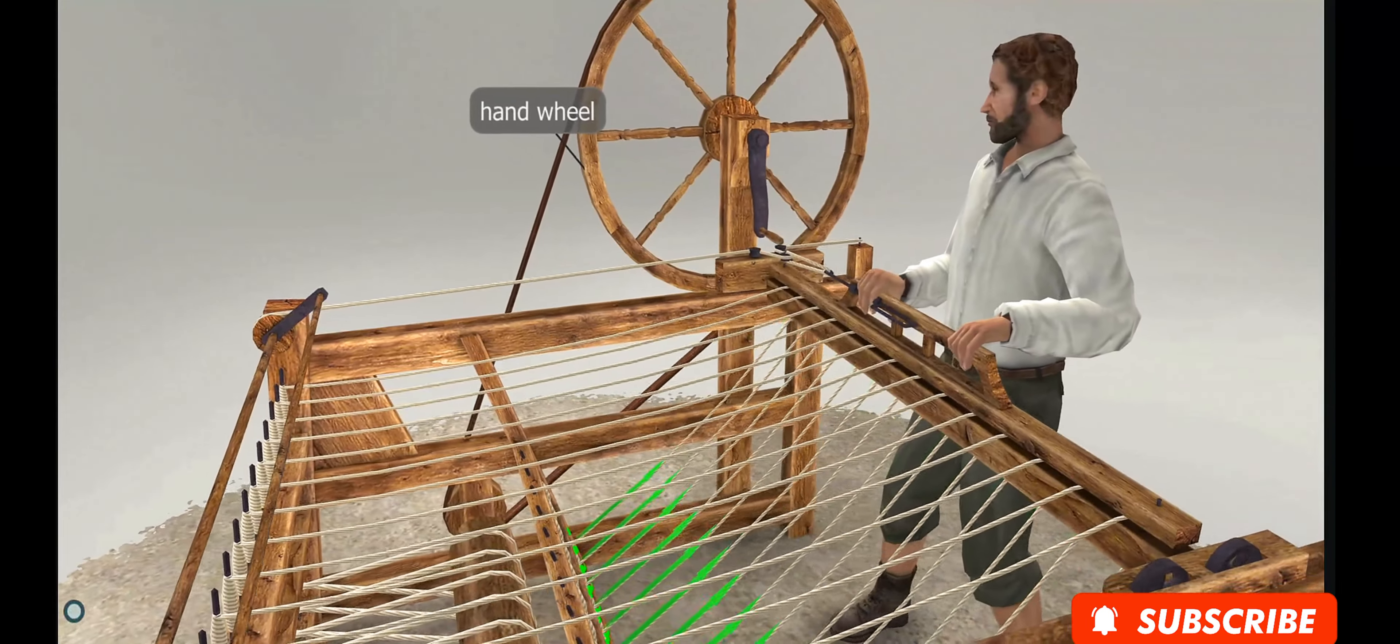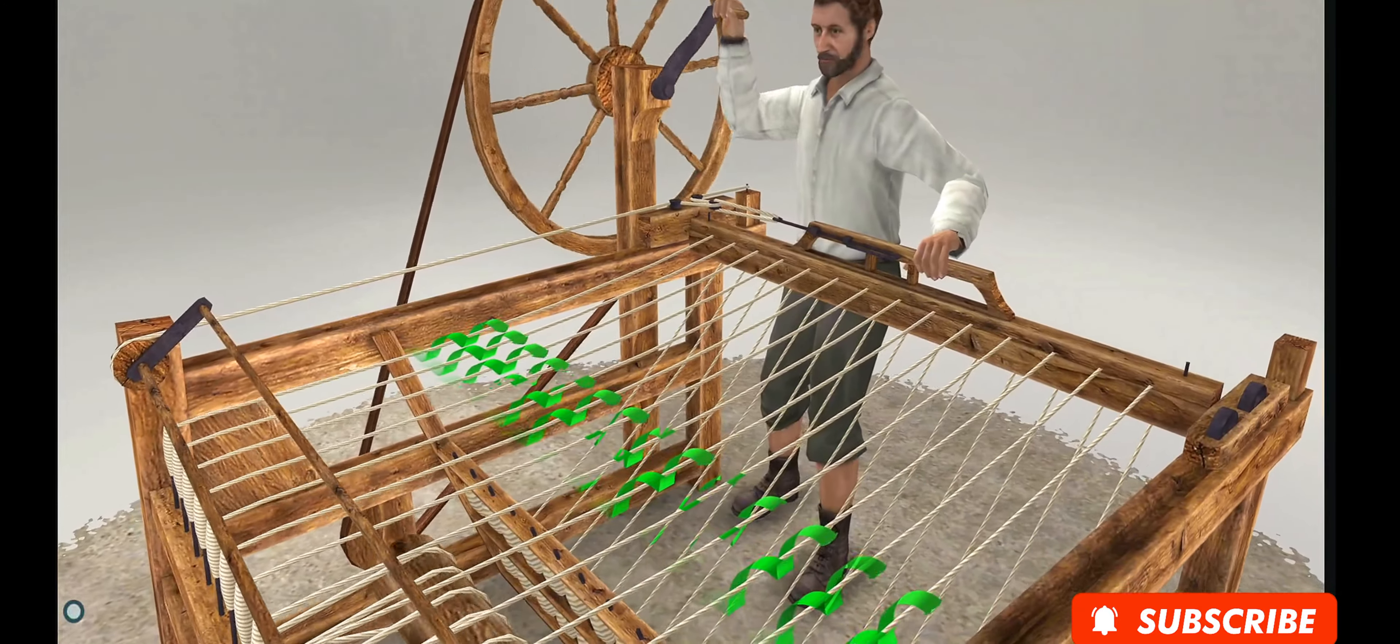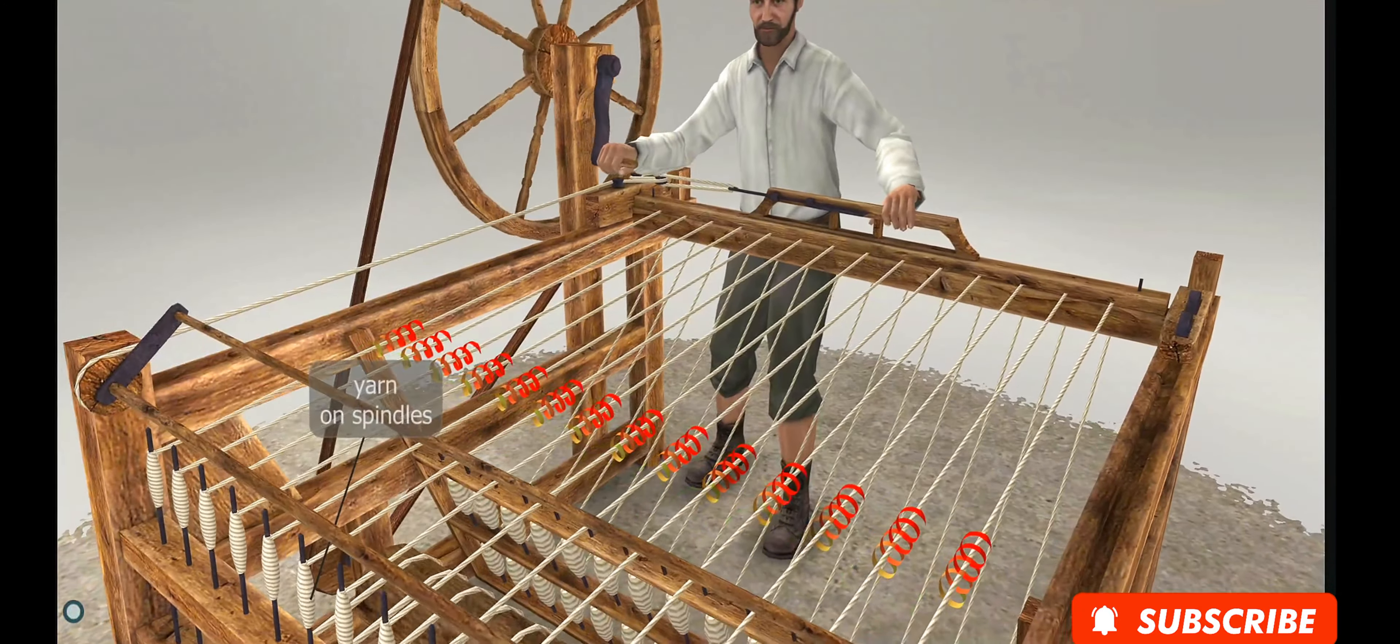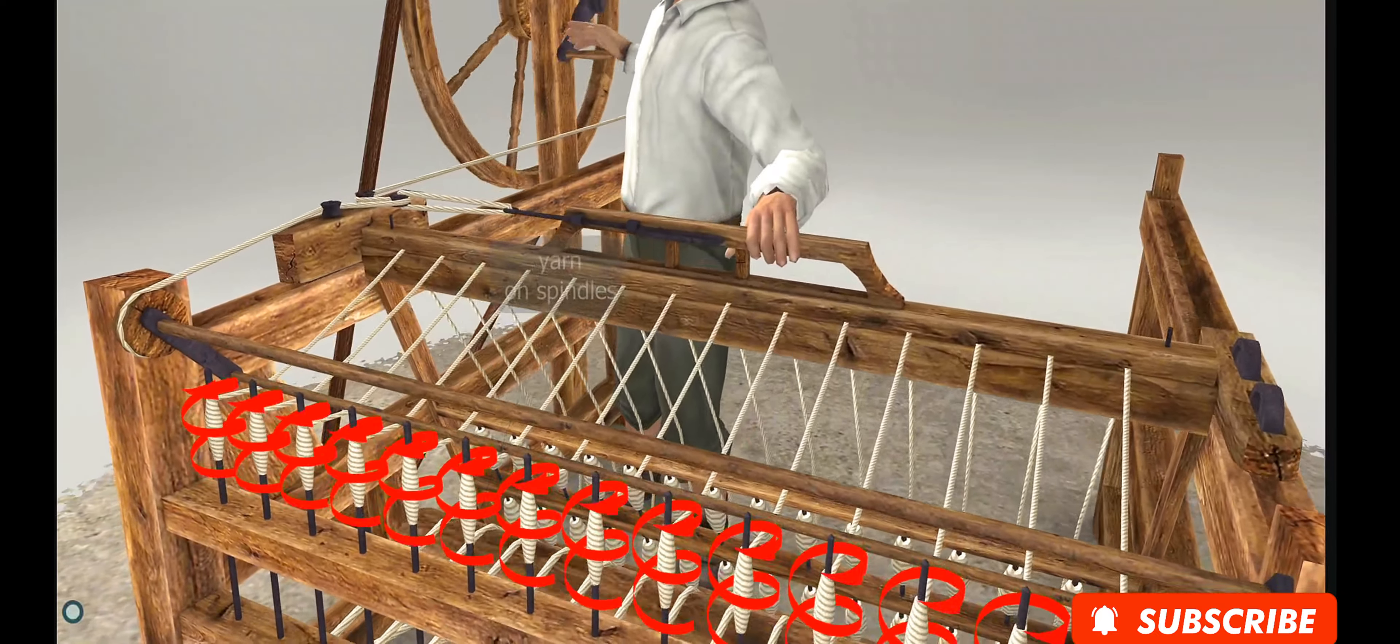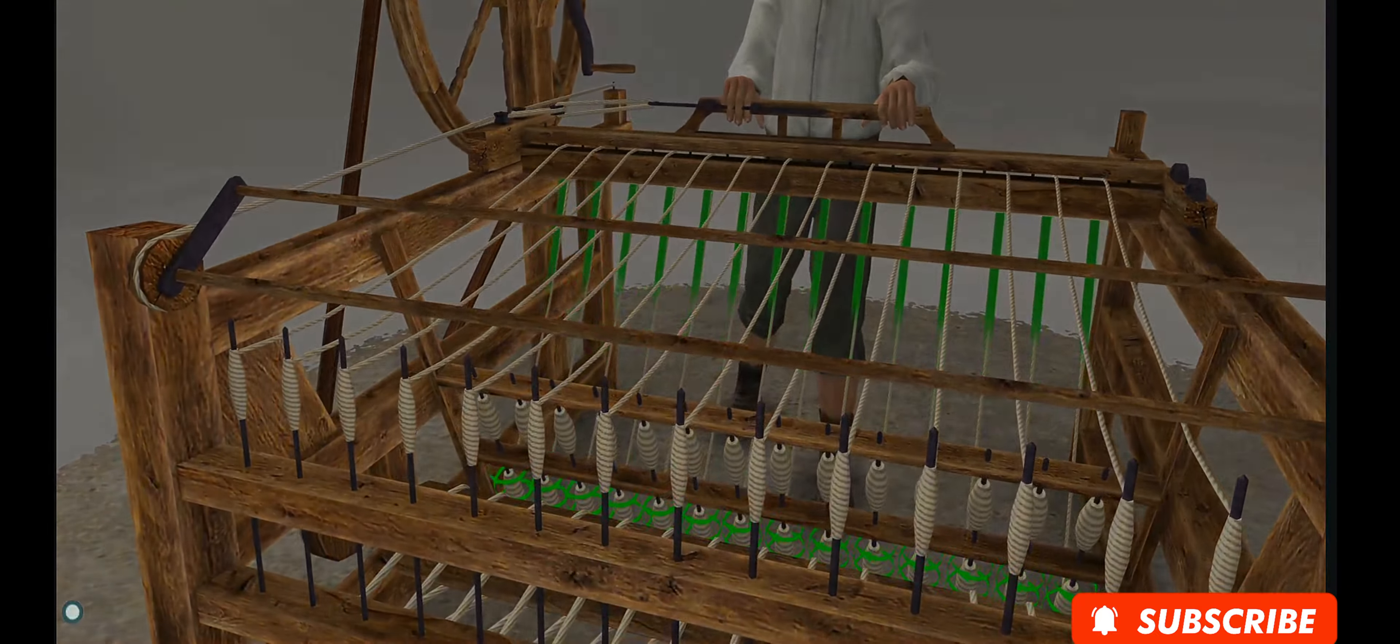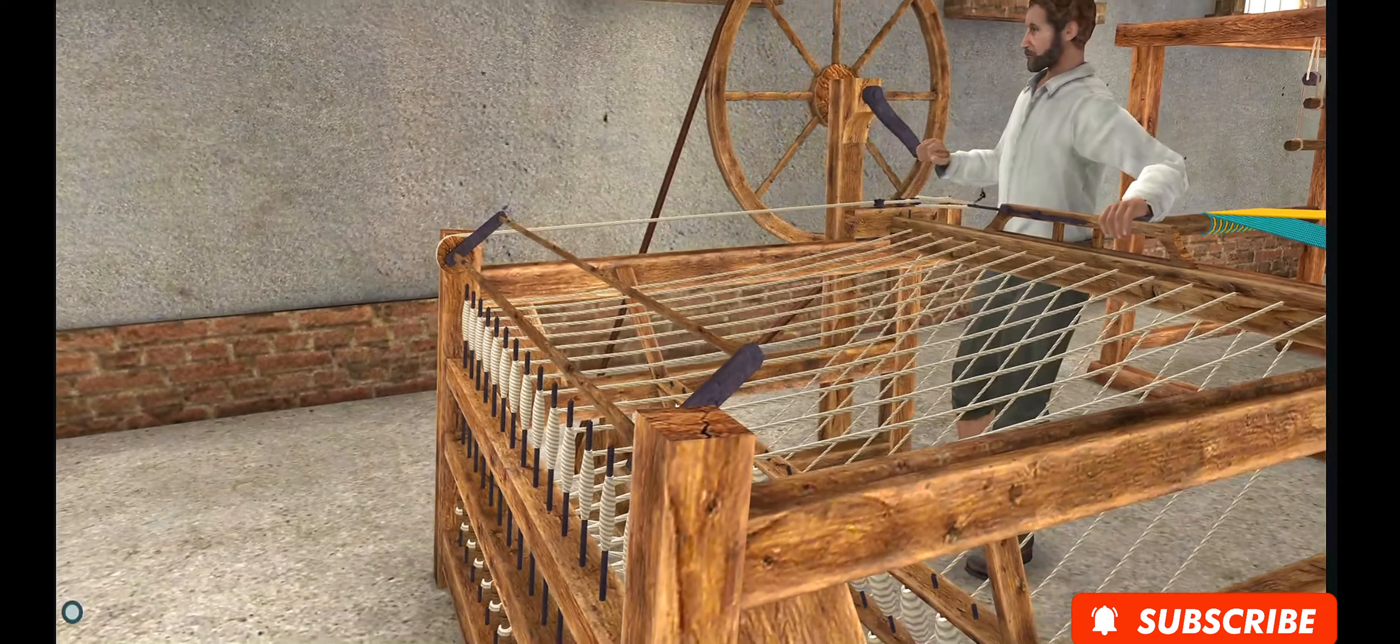The spinner feeds the fiber by pulling the yarn tension adjuster backwards, then turns the wheel to twist the fiber into yarn, which is wound onto the spindles by pushing the adjuster carriage away from his body.